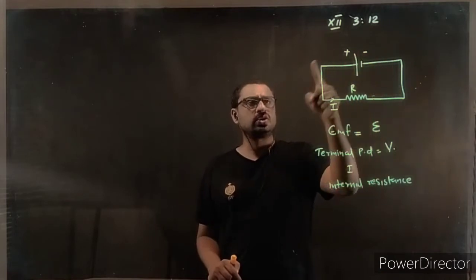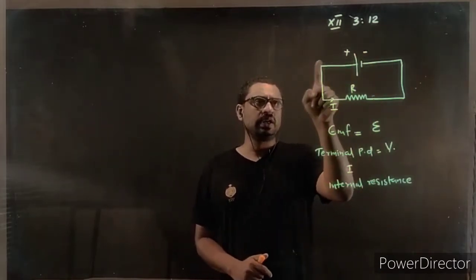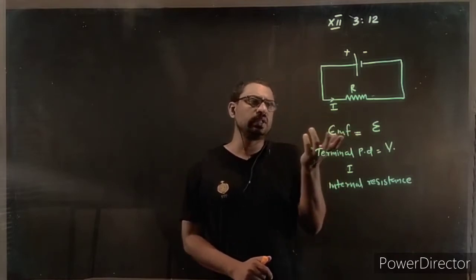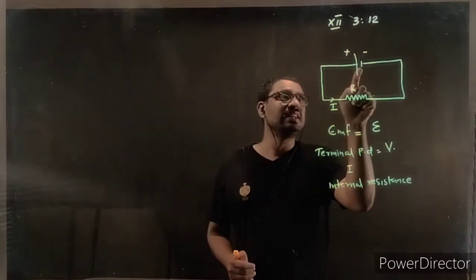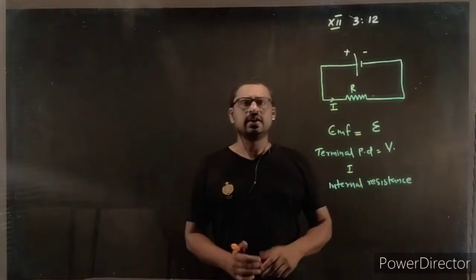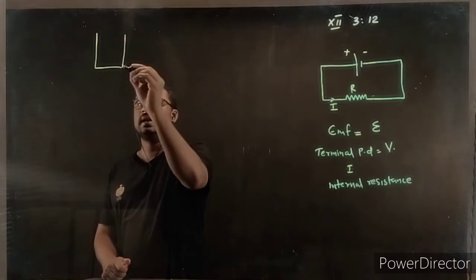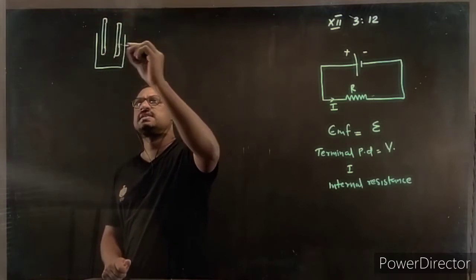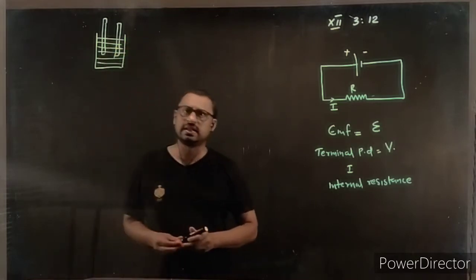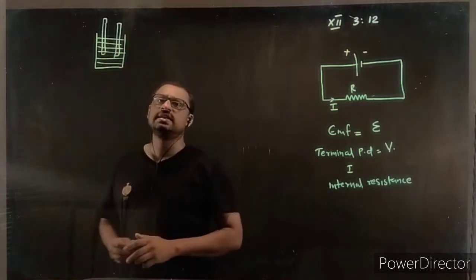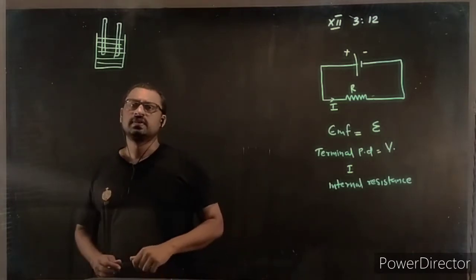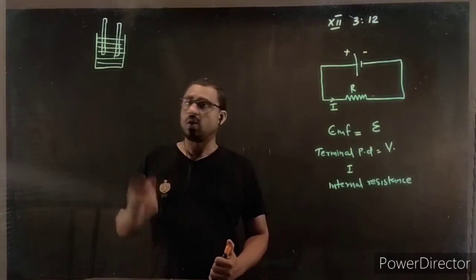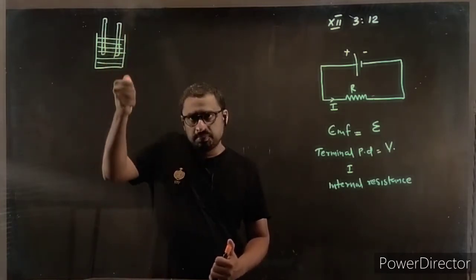For current to flow, it must complete the path — start from one point and come back to the same point for the circuit to be complete. During current flow through the entire closed circuit, there is a track inside the cell. A cell consists of electrolytes in a container with two electrodes — cathode and anode. When charges flow through this electrolyte and electrodes, the electrolyte and electrodes offer opposition, depending on the nature of the electrolyte, nature of the electrode, and concentration of the electrolyte.